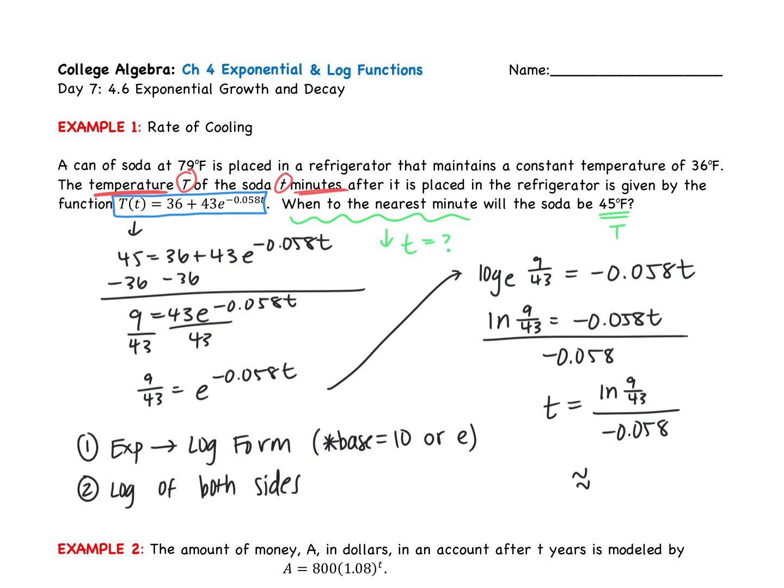At this point, we're going to have to go to the calculator to get an approximation. On the calculator, you're going to type this in exactly how it appears. There is an LN button. It should be on the left-hand column of your calculator. So we get an answer of about 26.97. But the question says to the nearest minute. So the nearest minute is going to be 27 minutes. That's the first one.